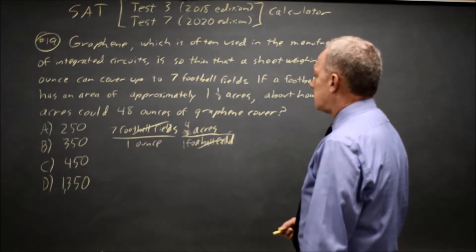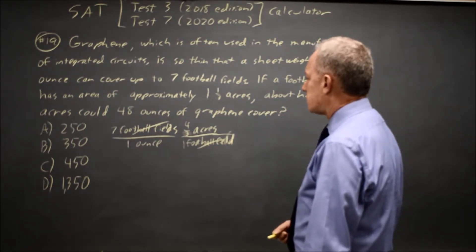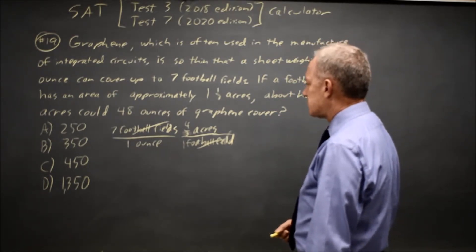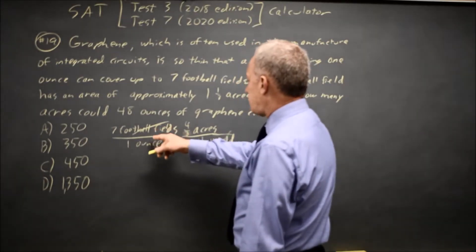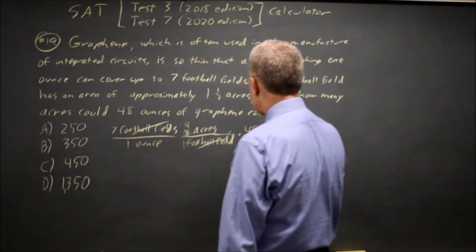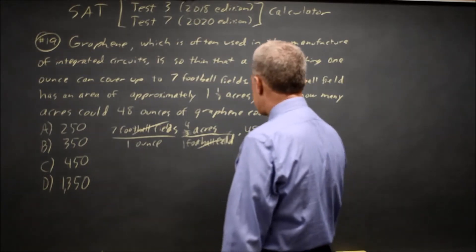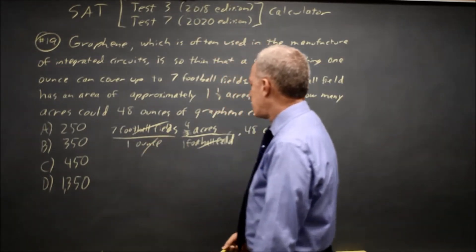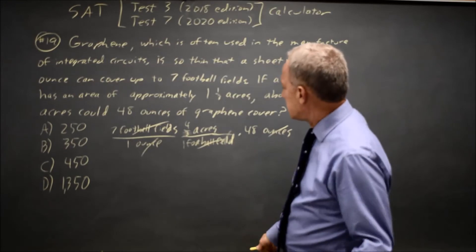And the question is, how many acres can you cover with 48 ounces? That's acres per one ounce, and I multiply that times 48 ounces, and that will cancel the ounces in the denominator, leaving us with just acres.